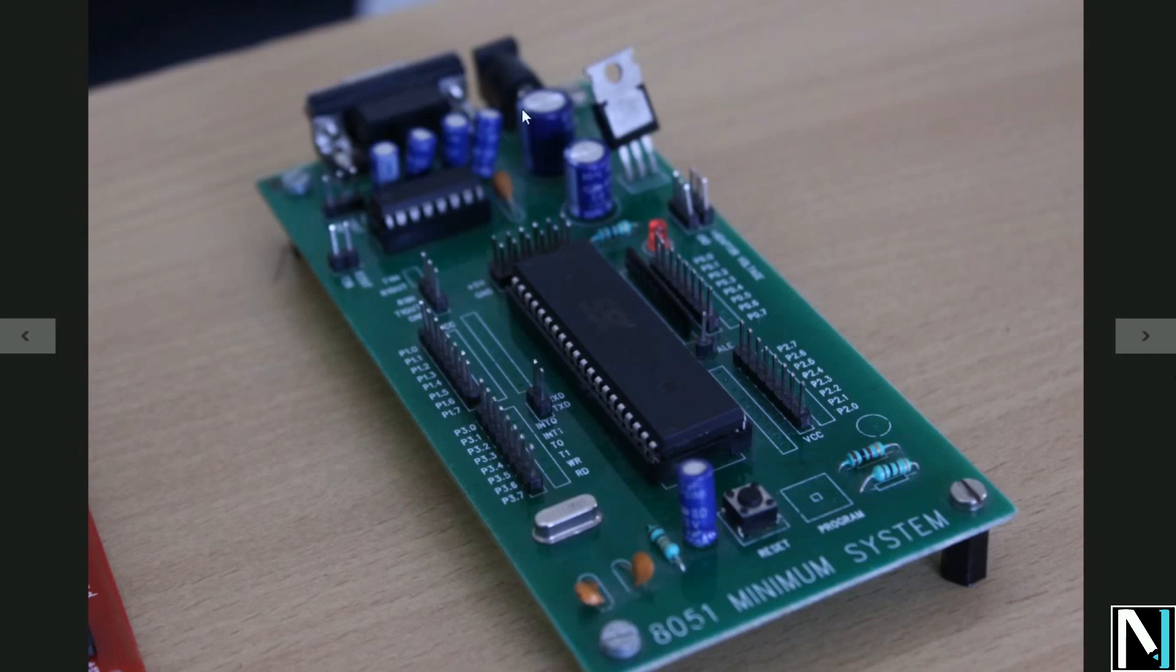This portion is related with the power supply. As your microcontroller requires plus 5 volt DC supply, this power adapter provides the power supply. This port, as we have seen in the block diagram, is a serial communication port called DB9 connector which is useful for serial communication between microcontroller and PC.